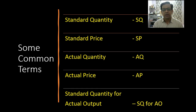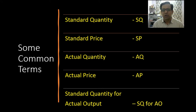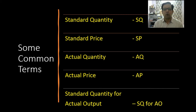The last and very important term is SQ for AO — standard quantity for actual output. That means: if I am producing 1000 kgs of finished goods, what is the quantity of raw material I need as per my standard? Throughout material variance, whenever we say SQ we actually mean SQ for AO. Standard quantity by itself is not used directly in formulas — we use SQ for AO.